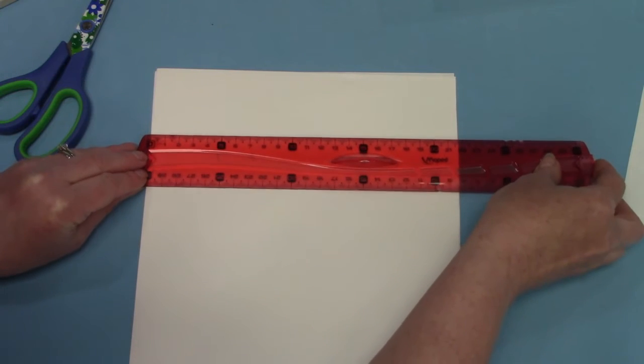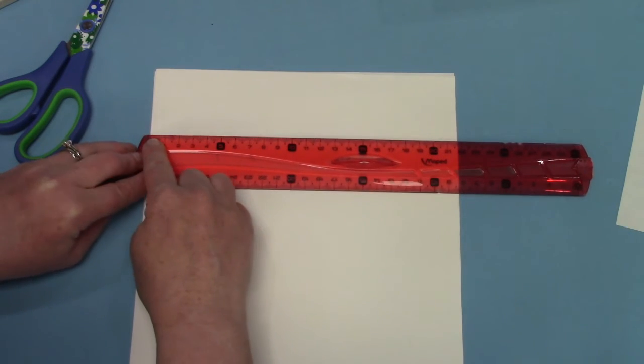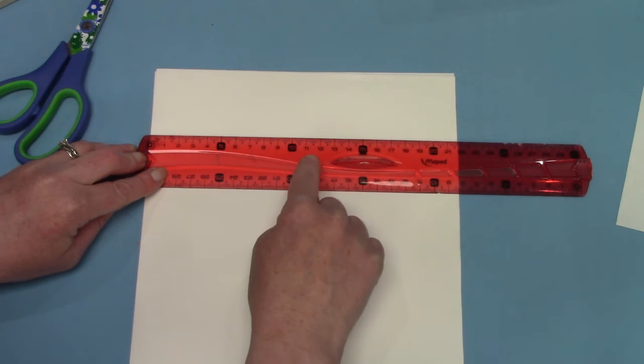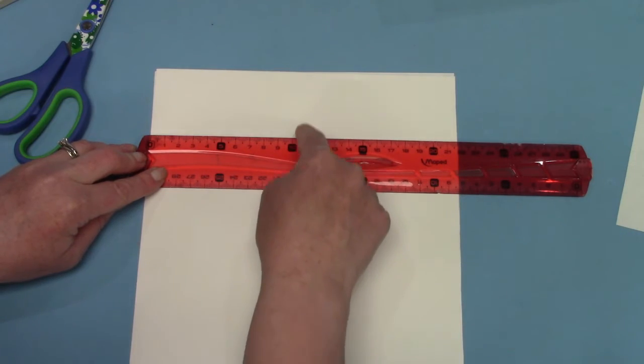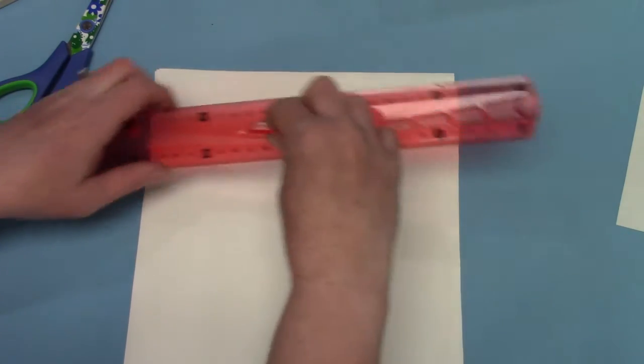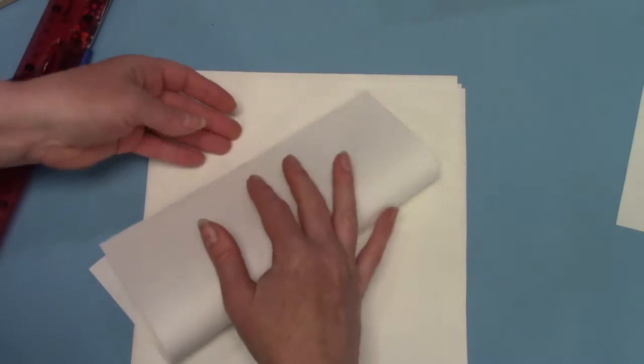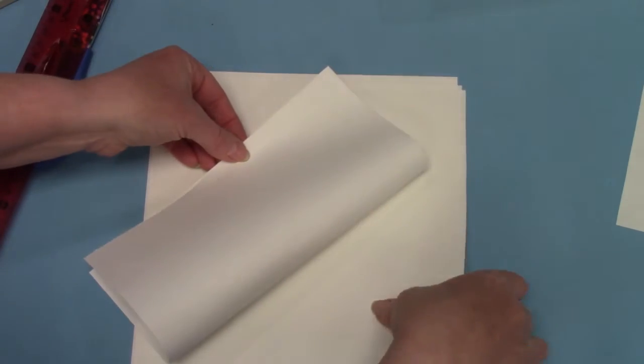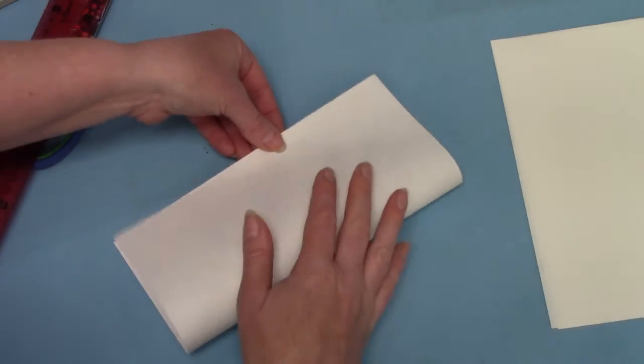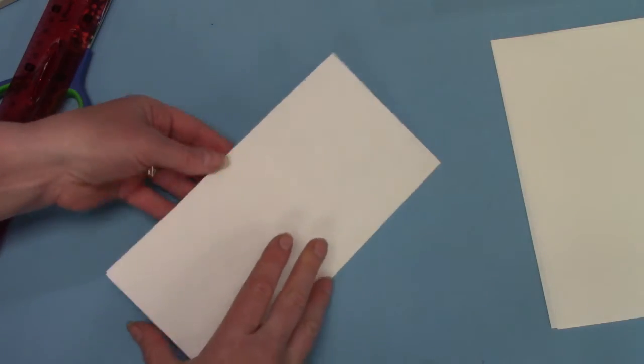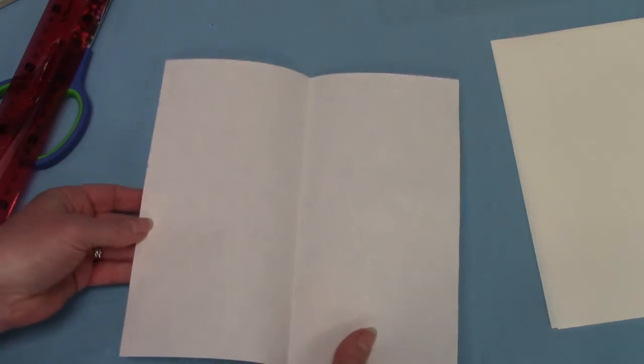I suppose I could measure it and I see that it is almost 22 centimeters long and half of that would be about 11 centimeters. So I could mark it about there. Or I could fold my paper in half. I'm going to try that. I'm going to put my ends together as carefully as I can and fold the paper and that will give me two halves of the paper.